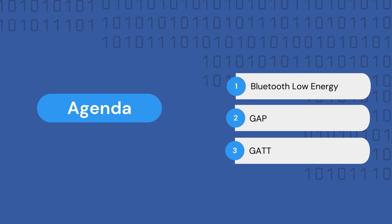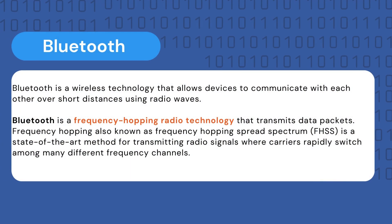We will also define the BLE stack, then take a look at the Generic Attribute Protocol layer, or GATT, and the Generic Access Profile, or GAP, which are part of the BLE protocol stack. Bluetooth is a wireless technology that allows devices to communicate with each other over short distances using radio waves. It was originally designed for use cases in audio devices such as headphones and speakers, but has since been used in a variety of other applications such as internet connectivity.